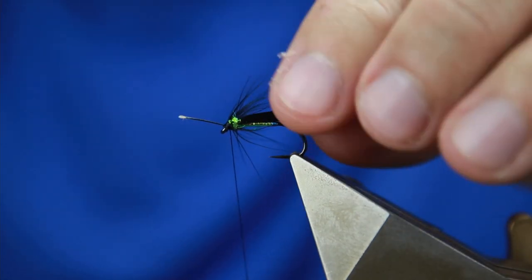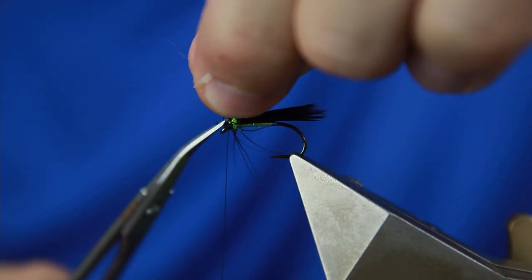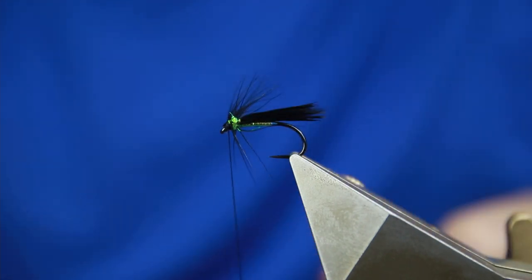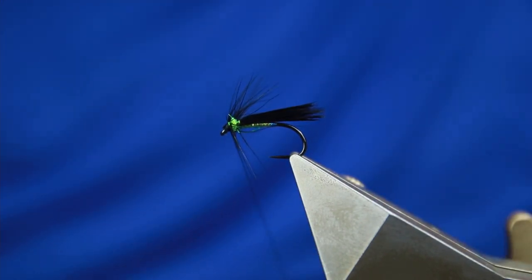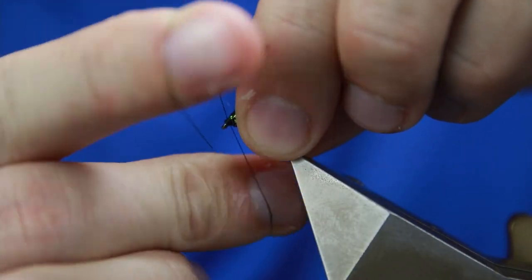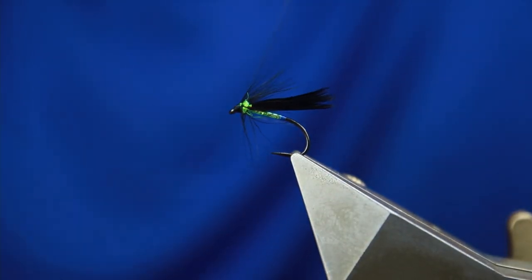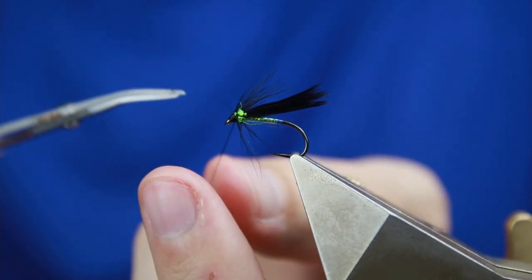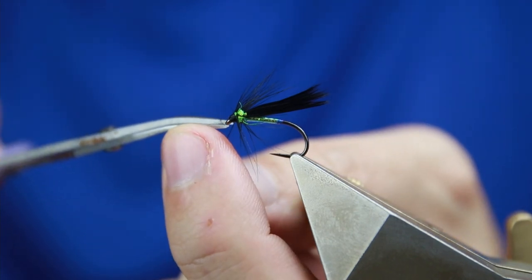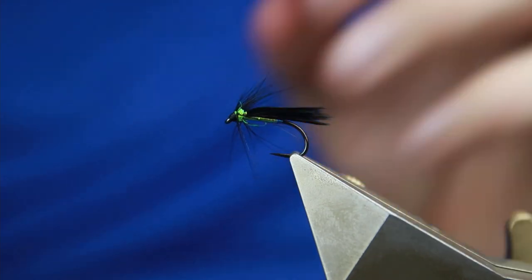Build a nice little head, and then come in with the stalk off. And then quick whip finish. Cut that away, and then just a touch of varnish.